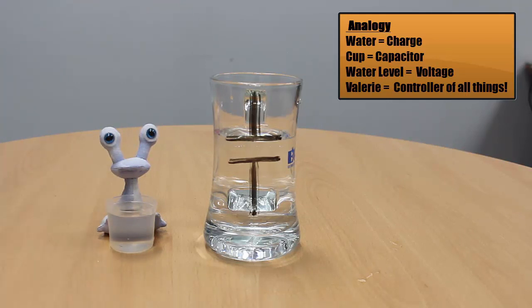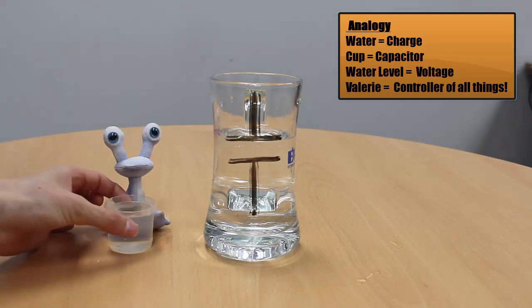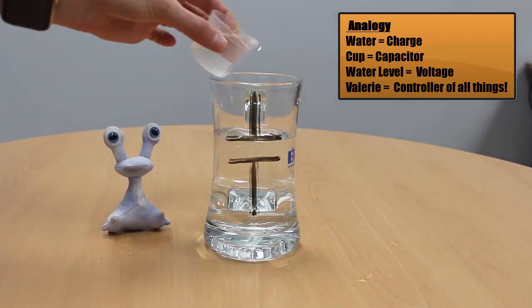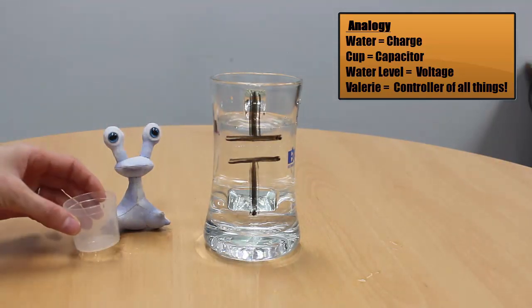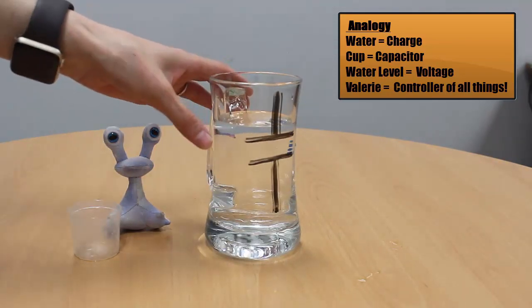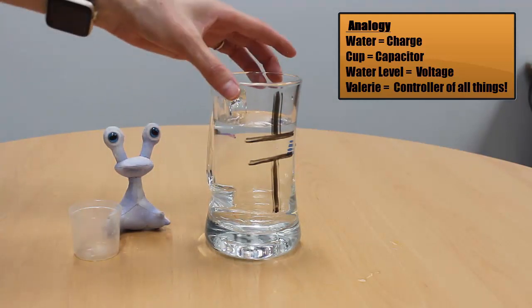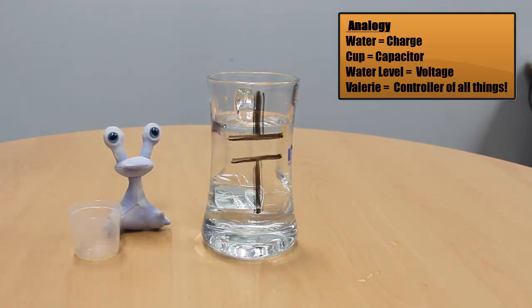So if during the cycle, we take some charge, which is represented as water here, we put it into our capacitor, we see that the voltage level, the level of water, is increased during the cycle.